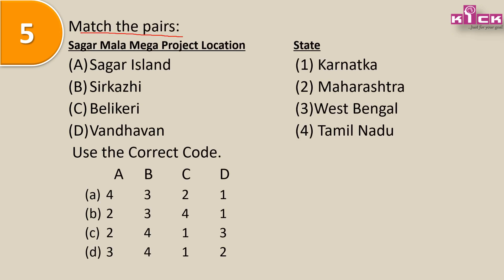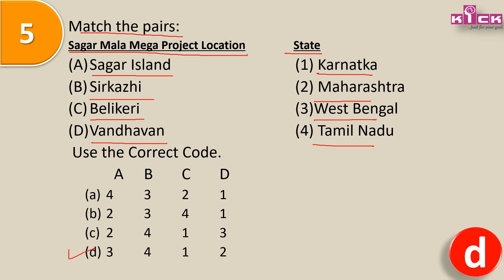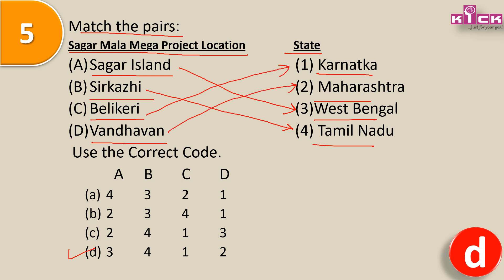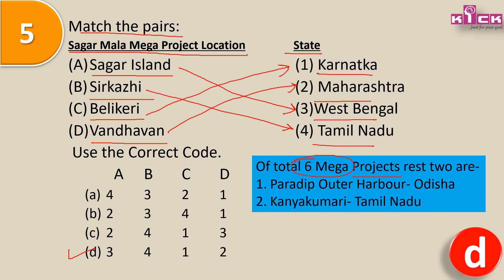Last question - Match the pairs: Sagar Mala Megaprojects with their location/state. A - Sagar Islands, B - Sirkhazi, C - Belicherry, D - Vandavan; with states Karnataka, Maharashtra, West Bengal, Tamil Nadu. Answer is D. Sagar Islands - West Bengal; Sirkhazi - Tamil Nadu; Belicherry - Karnataka; Vandavan - Maharashtra. Total 6 megaprojects थे - additionally Paradeep Outer Harbor in Odisha and Kanyakumari in Tamil Nadu.